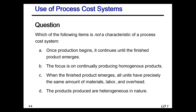Which of the following items is not a characteristic of a process cost system? I'm going to provide you with these test questions so that you have an understanding of what may be similar to the actual quiz. A: once production begins it continues until the finished product emerges. B: the focus is on continually producing homogeneous products. C: when the finished product emerges, all units have precisely the same amount of materials, labor, and overhead. Or D: the products produced are heterogeneous in nature.